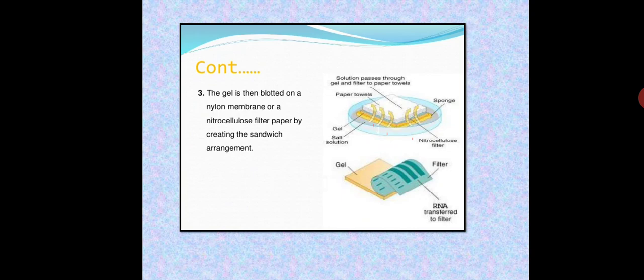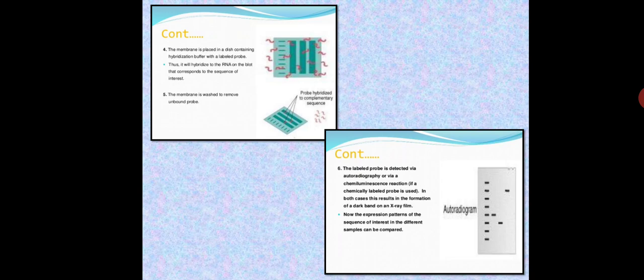Once the paper gets wet, we remove the nylon membrane containing our transferred RNA. In the next step, we add that membrane along with the RNA into a solution containing a radio-labeled probe. We add probes that are complementary to our RNA sequence. The complementary sequence will bind, and uncomplimentary sequences will remain unbound. This hybridization is detected by autoradiography, depending on how our probe is labeled. If it is radio-labeled, we use autoradiography.